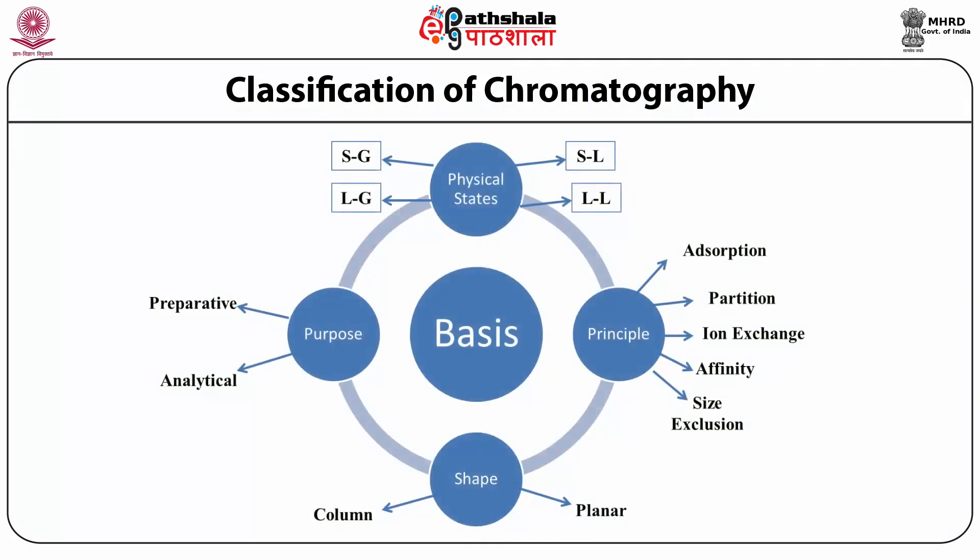This diagram shows the classification of chromatography on the basis of different aspects. On the basis of physical states, chromatography may be solid-liquid, solid-gas, liquid-liquid and liquid-gas. On the basis of purpose, it is preparative or analytical. As far as shape is concerned, it can be column chromatography or planar chromatography. Chromatography is also classified on the basis of principle as adsorption, like thin layer and high performance thin layer chromatography; partition, like gas liquid chromatography; size exclusion; affinity; and ion exchange chromatography.